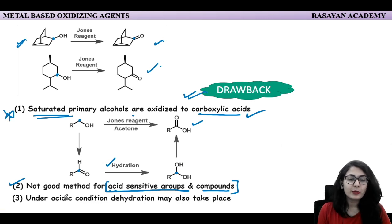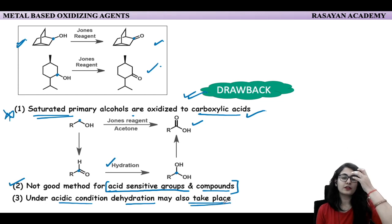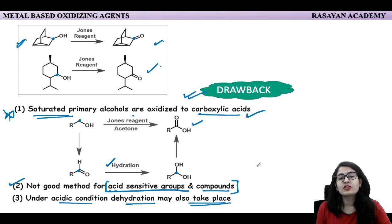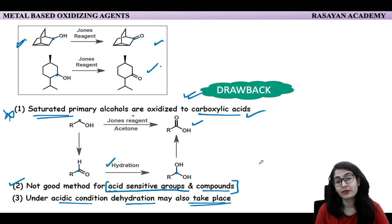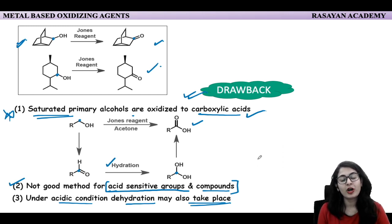Third point: under acidic conditions, dehydration may also take place. Jones reagent is too acidic, so it does not tolerate acid-sensitive groups and it can also cause dehydration of the alcohol — no alcohol means no ketone. That is the problem with Jones oxidation.